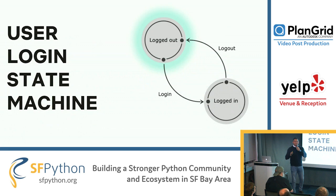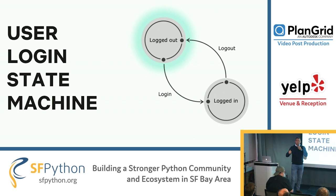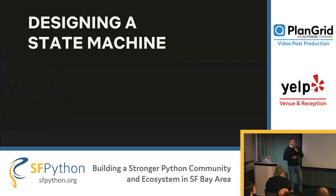Here's a basic example: a state machine for when a user lands on a website. When the user lands for the first time, the user is logged out — that's the initial state, shown with a green-blue glow. Once a user is in the logout state, the user can perform the login transition to move to the login state. Once in the login state, the user can perform the logout transition to move back to the logout state. This is a very simple state machine.